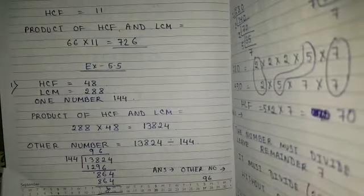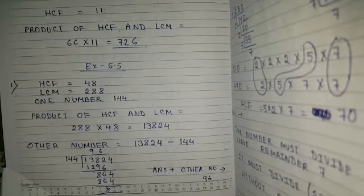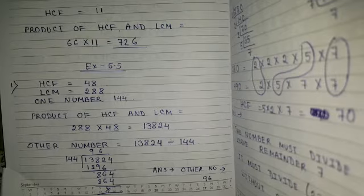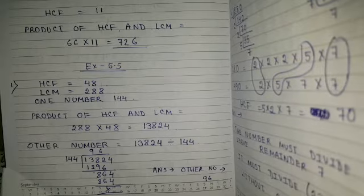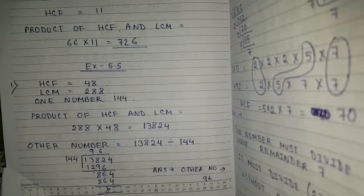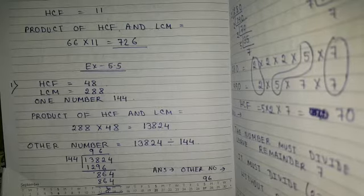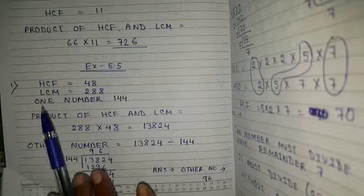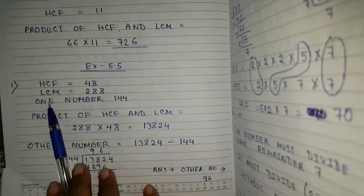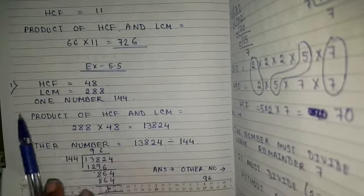Now we will start Exercise 5.5. Here we will use the formula that product of two numbers equals HCF into LCM. Question number 1: the HCF and LCM of two numbers are 48 and 288 respectively. One of the numbers is 144 — find the other number. So HCF equals 48, LCM equals 288, and one number is 144.